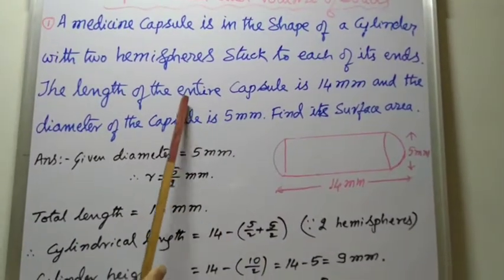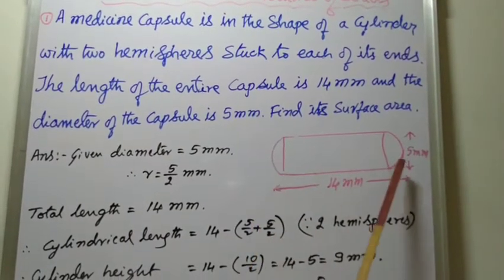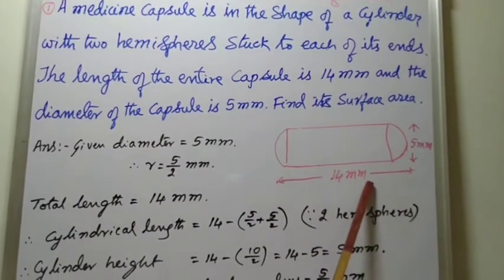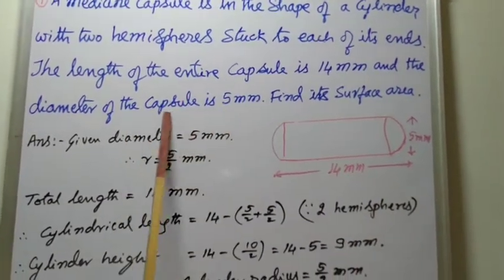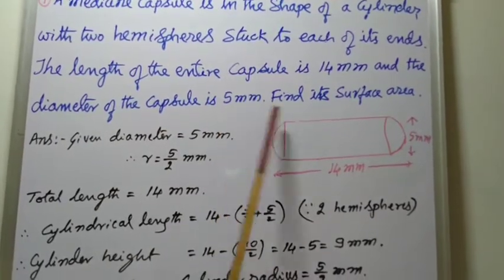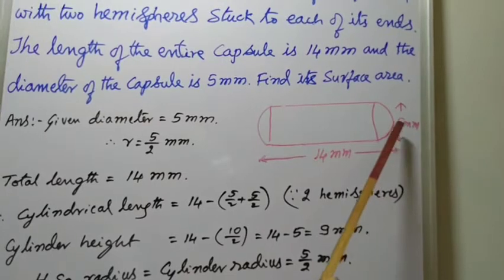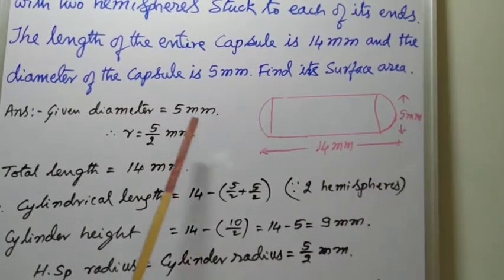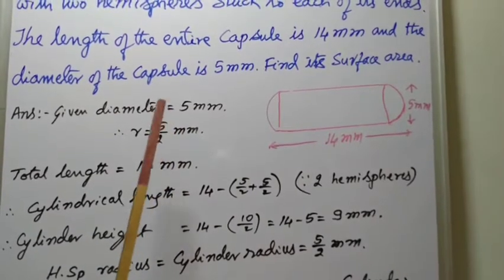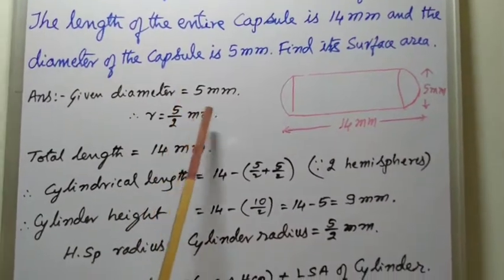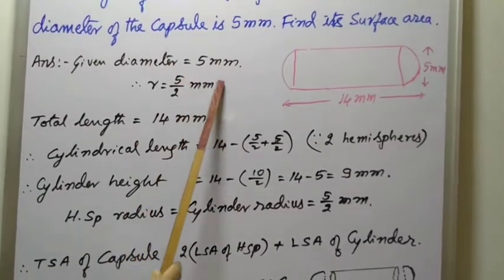And the entire length of the capsule is from this end to this end 40 mm. And the diameter of the capsule is 5 mm diameter. So if the diameter is 5 mm, radius equals 5 by 2 mm. Let it be in fraction 5 by 2, not decimal form. And the unit is in millimeters.